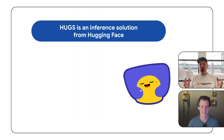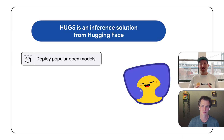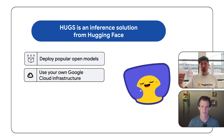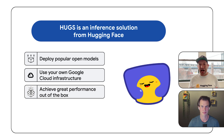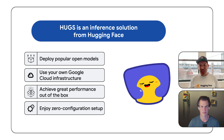Hugs is a new inference solution from HuggingFace. It's the easiest way to deploy the most popular open models in your own Google Cloud tenancy, getting maximum performance out of the box without having to fiddle with configurations. Well, that sounds great. Let me show you how to use Hugs — how to deploy an open model on GKE with Hugs.